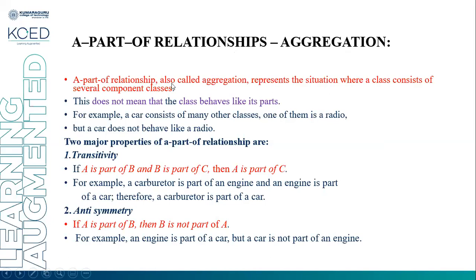A part-of relationship, also called aggregation, represents the situation where classes consist of several complex classes — the classes are having other classes. This does not mean that classes behave like their parts. For example, a car consists of many other classes; one of them is a radio, but the car does not behave like a radio.